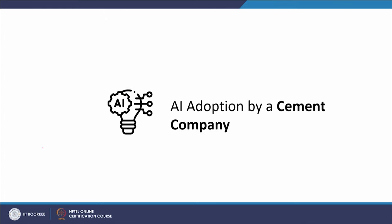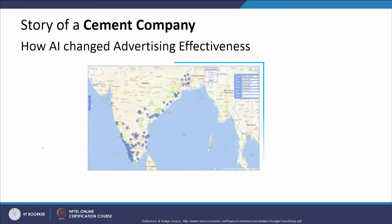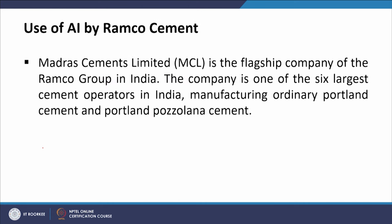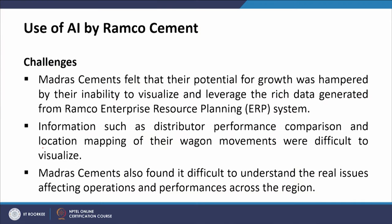Let us look at this example of AI adoption by a cement company — this is the story of how AI changed advertising effectiveness. That is the use of AI by Ramco Cements. Madras Cement Limited is the flagship company of the Ramco Group in India, one of the six largest cement operators, manufacturing ordinary Portland cement and Portland Pozzolana cement. The challenge they faced was that their potential for growth was hampered by their inability to visualize and leverage the rich data generated from the Ramco Enterprise Resource Planning System.